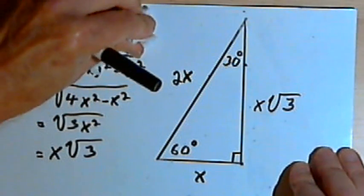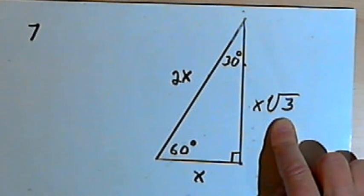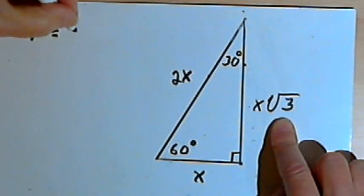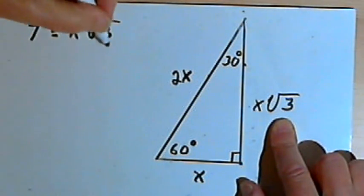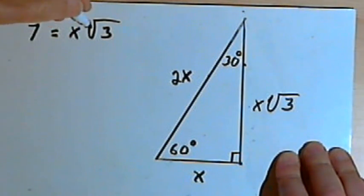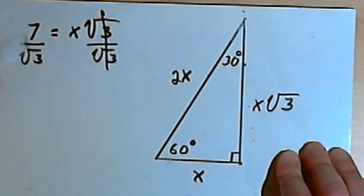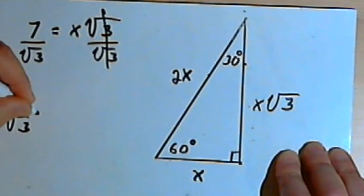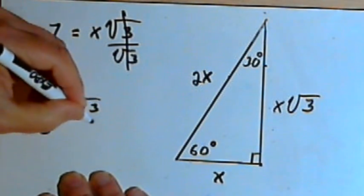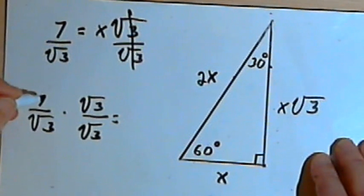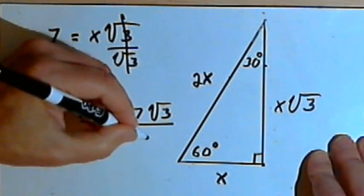Now let's see what happens if we know the longer leg. Say the long leg is 7 yards. Setting 7 equal to x times the square root of 3 and solving for x, divide both sides by the square root of 3. The square roots cancel, giving x equals 7 over the square root of 3. Rationalizing by multiplying by the square root of 3 over the square root of 3 gives 7 times the square root of 3 over 3. The hypotenuse, being twice the short leg, would be 14 times the square root of 3 over 3.